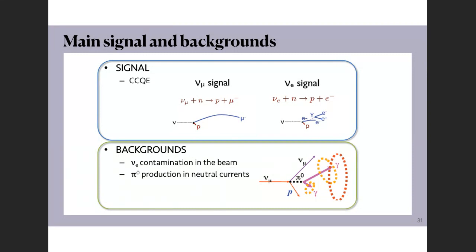The three main event topologies in our detectors: charged-current quasi-elastic events show a muon track plus typically a proton; for electron neutrino signals we look for electromagnetic showers plus other hadrons. Backgrounds include the intrinsic beam electron neutrino contamination and neutral current π⁰ production, which produces photons that can mimic electron showers. Distinguishing photons from electrons is crucial for separating signal from background.